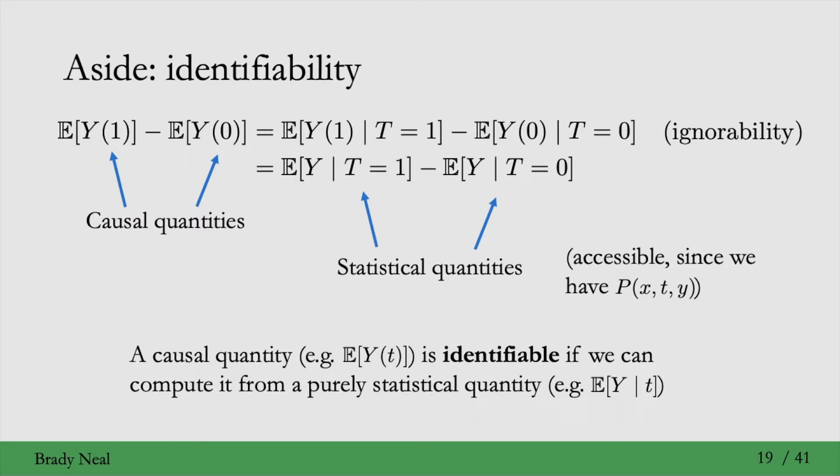Alright, so ignorability slash exchangeability is a very important assumption because it gives us identifiability of the causal effect.